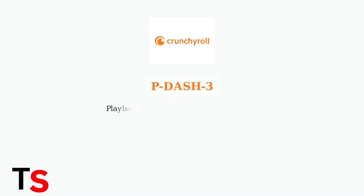The P-3 error on Crunchyroll is a playback issue that prevents you from streaming videos. This error code appears when something goes wrong with the video delivery system.